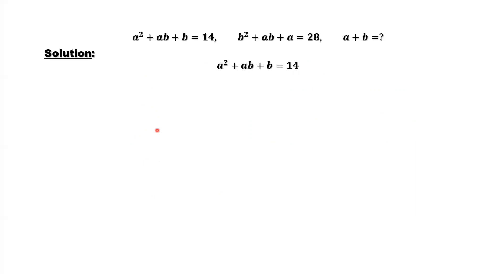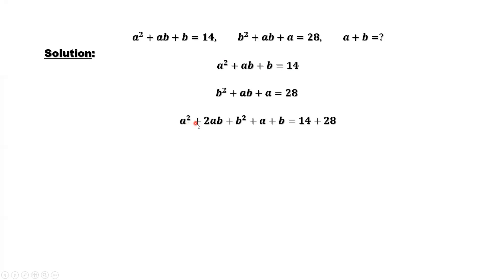From the two given conditions, we can add up both sides. The left-hand side equals a squared plus 2ab plus b squared plus a plus b. The right-hand side, that's 14 plus 28. To simplify both sides, we have the first part — that's a plus b squared.